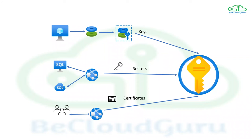Azure Key Vault comes in two different tiers. The Standard tier uses software-based keys only for encryption. In the Premium tier, a hardware security module is also included, allowing you to protect your keys using FIPS 140-2 Level 2 validated HSMs. One important thing to remember: Key Vault is designed to support application keys and secrets but is not intended to store user passwords.